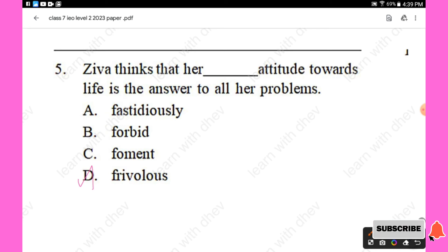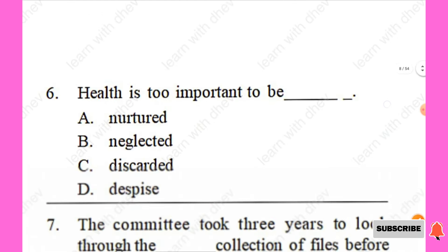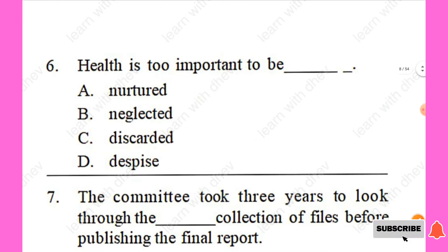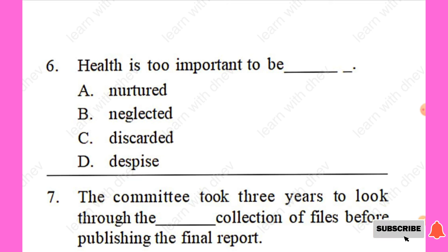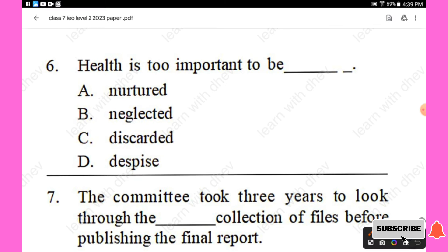Question 6: Health is too important to be — . Options are: nurtured, neglected, discarded, despised. The right answer is 'neglected' — Health is too important to be neglected. Option B is the right answer.